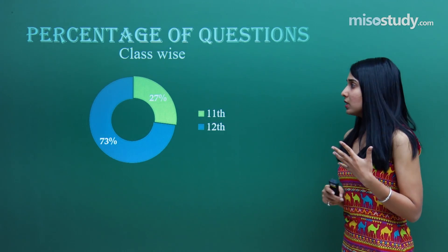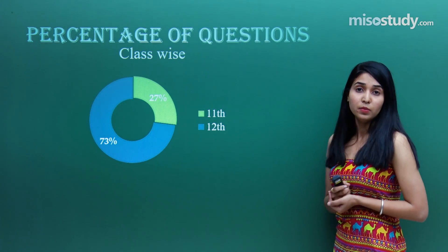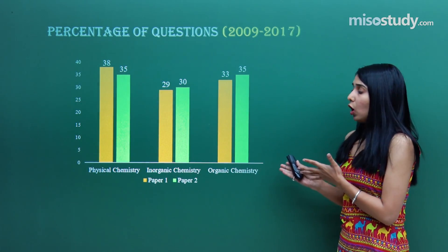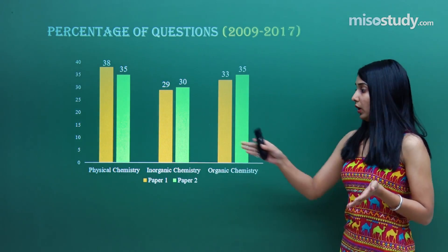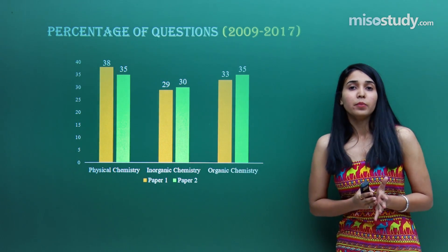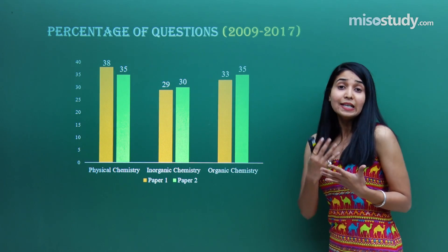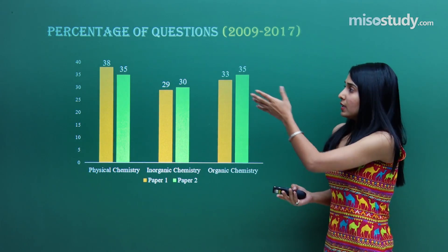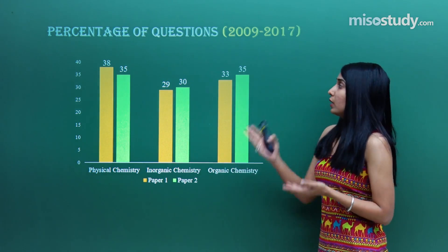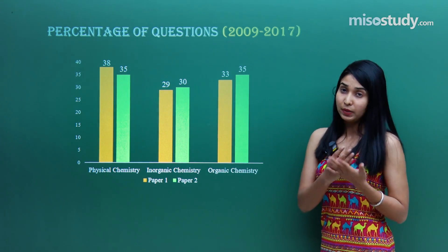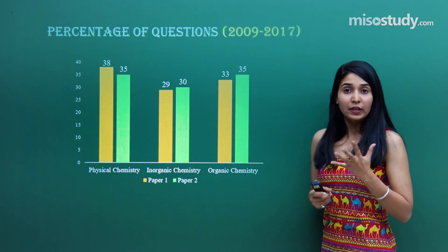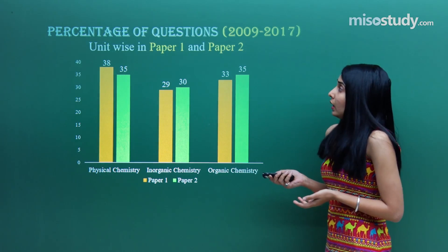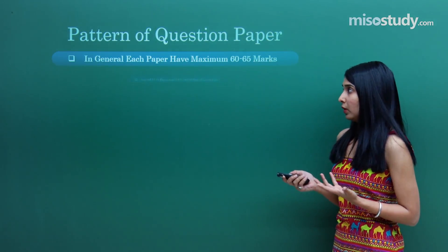As the analysis says, approximately 27% of Chemistry questions cover from 11th standard and approximately 73% from 12th standard. If I talk about the sections of Chemistry — inorganic, organic, and physical — almost the same distribution appears in both papers. Sometimes Paper 1 has 30 questions and Paper 2 has 32; sometimes it's 38 or 35, sometimes 29 or 30. It totally depends on how the exam is made. Around 10 years of analysis shows this pattern, but we can't predict exactly what will happen.